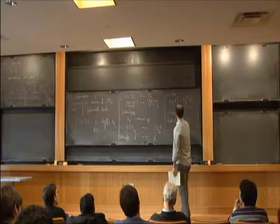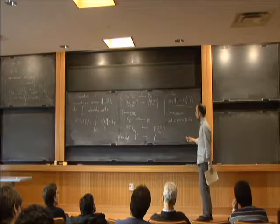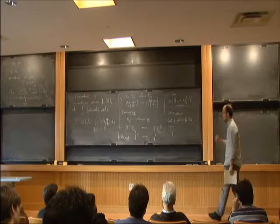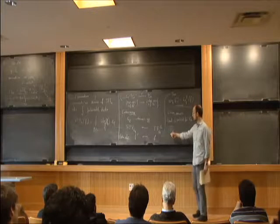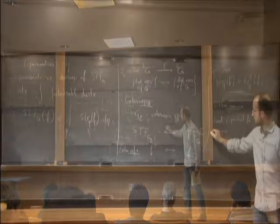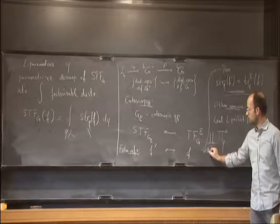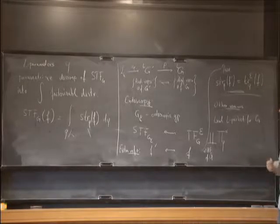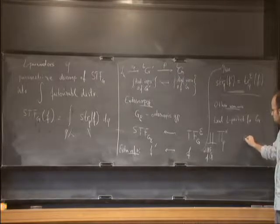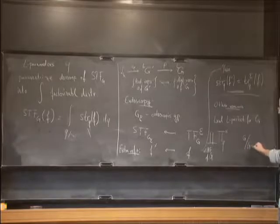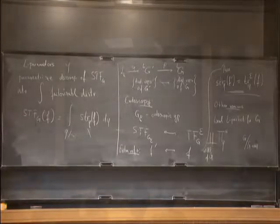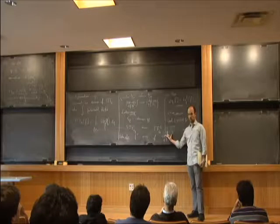Locally, what is a local L-packet for G? It's a set of representations associated to some parameter, with a very nice combinatorial description. However, this combinatorial description becomes nice only if you take the union of this packet over what is called the pure inner forms of G. A pure inner form is basically an equivalence class of a G-torsor, a principal homogeneous space for G. These principal homogeneous spaces show up naturally if you think not of the group G itself, but of the quotient of G by G-conjugacy as an algebraic stack.